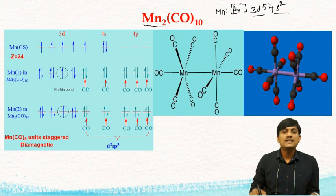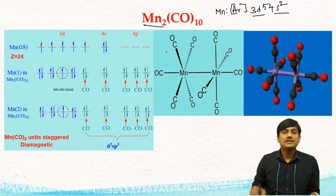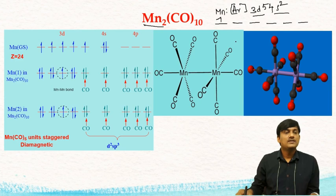But in the presence of CO ligands, there is a rearrangement of these 7 electrons — arranged as 2, 2, 1, 2. You can find 5 empty orbitals and 1 orbital filled with a single unpaired electron.